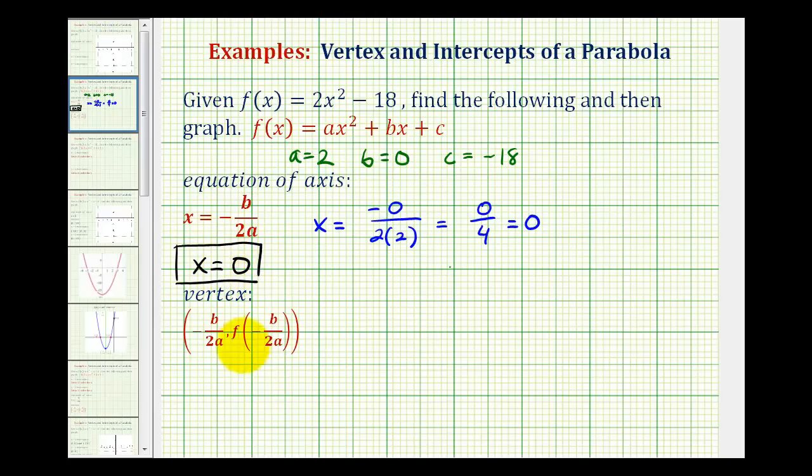Next, to find the vertex, remember the vertex is on the axis of symmetry, so the x-coordinate must be 0. To find the y-coordinate, we need to find f of 0. Well, f of 0 is 2 times 0 squared minus 18, which is 0 minus 18, or negative 18. So our vertex has coordinates 0 comma negative 18.